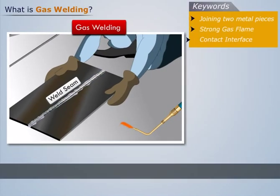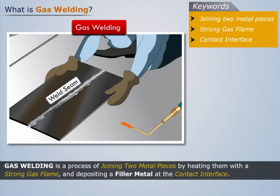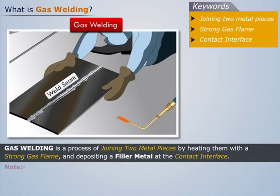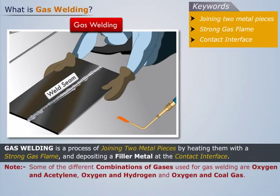Thus we can say that gas welding is a process of joining two metal pieces by heating them with a strong gas flame and depositing a filler metal at the contact interface. Some of the different combinations of gases used for gas welding are oxygen and acetylene, oxygen and hydrogen, and oxygen and coal gas.